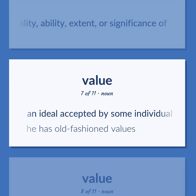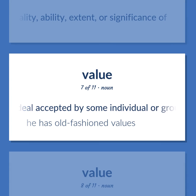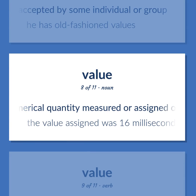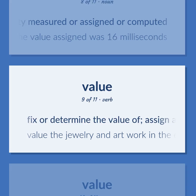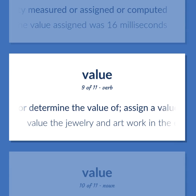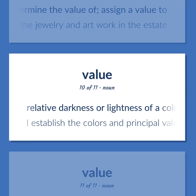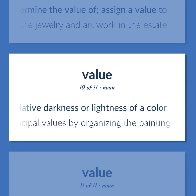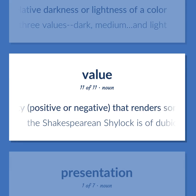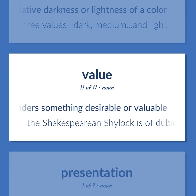An ideal accepted by some individual or group. He has old-fashioned values. A numerical quantity measured or assigned or computed. The value assigned was 16 milliseconds. Fix or determine the value of; assign a value to. Value the jewelry and artwork in the estate. Relative darkness or lightness of a color. I establish the colors and principal values by organizing the painting into three values: dark, medium, and light. The quality, positive or negative, that renders something desirable or valuable. The Shakespearean Shylock is of dubious value in the modern world.